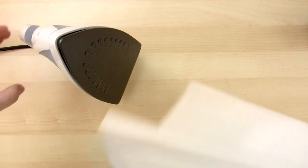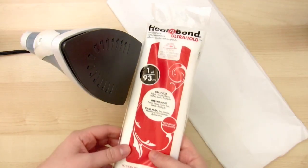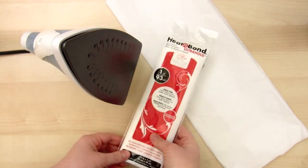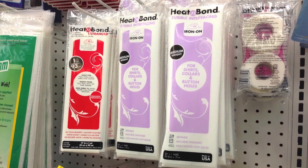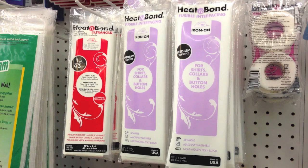What you'll need is an iron, tissue paper, and HeatNBond Ultra Hold iron-on adhesive. The HeatNBond Ultra Hold can be found at a fabric store or you can find it for sale online.